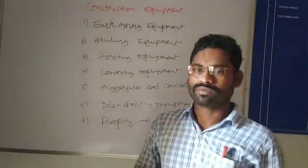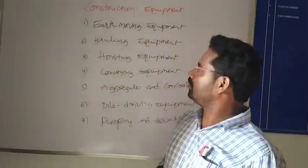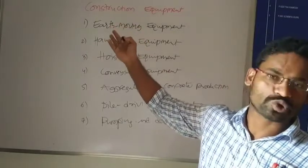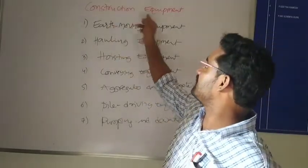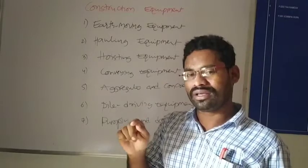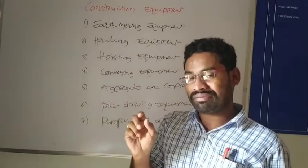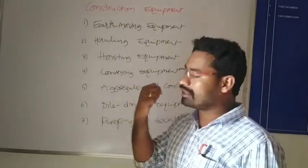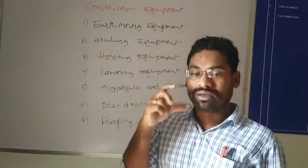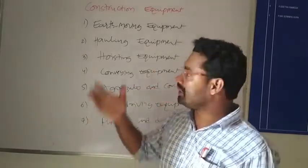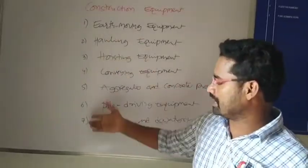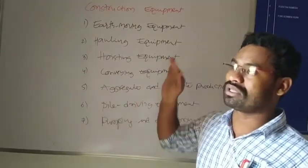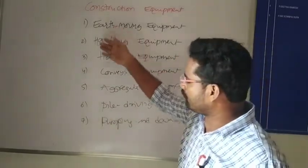Good morning. Today I'm going to explain about construction technology management — the next topic is construction equipment. We already had a brief introduction in the previous class. Now we'll go into full detail. There are around seven classifications of construction equipment.